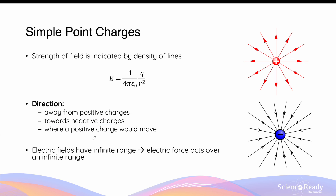The direction of electric field lines is also indicative of where a positive charge would move if placed inside the field. For example, if a positive charge is placed inside the field lines of another positive charge, the direction of the field line indicates where that charge will move — in this case, radially away from the positive charge providing the field.